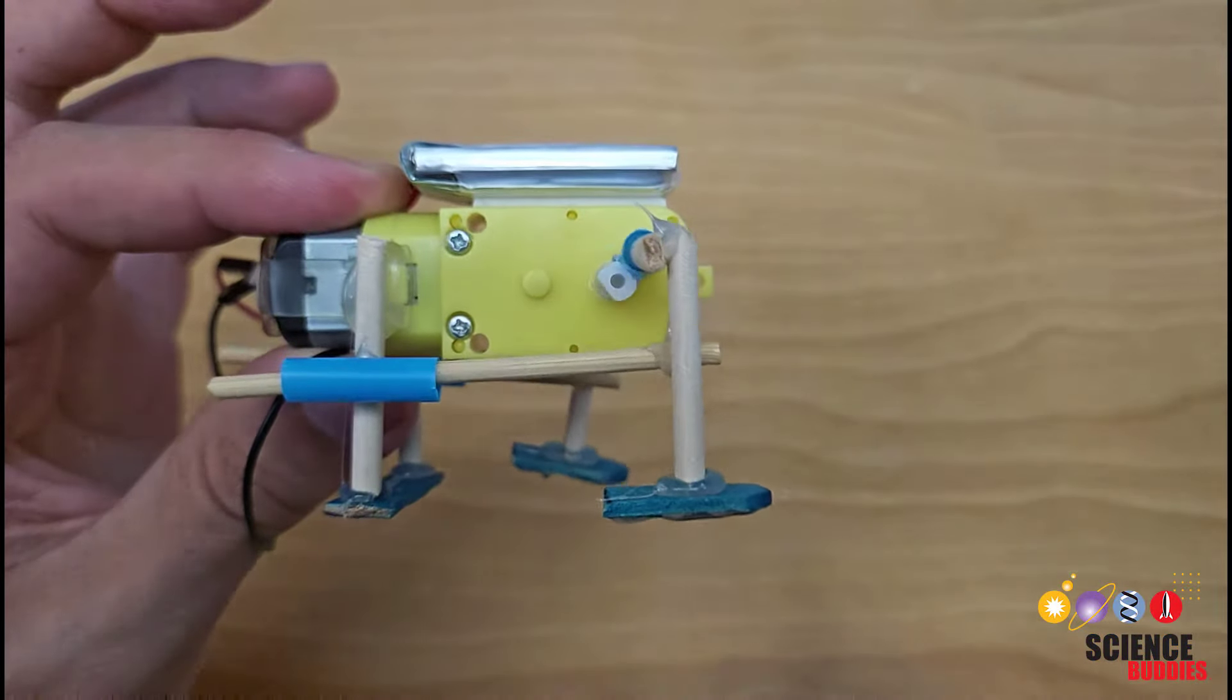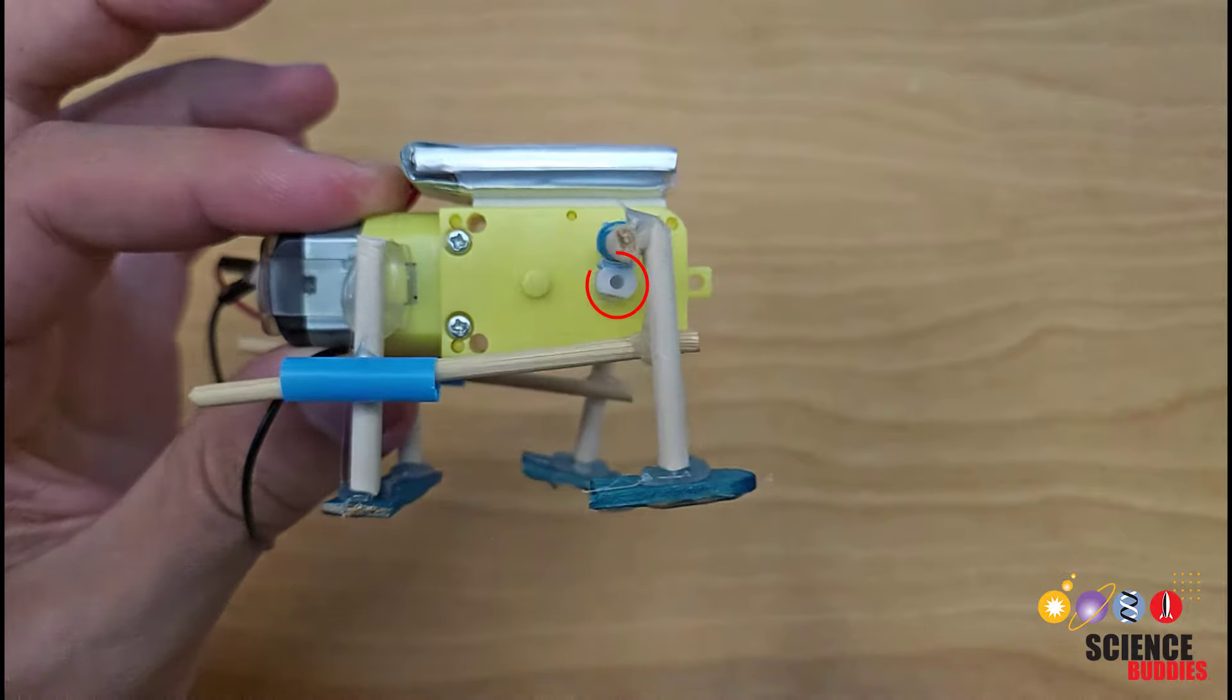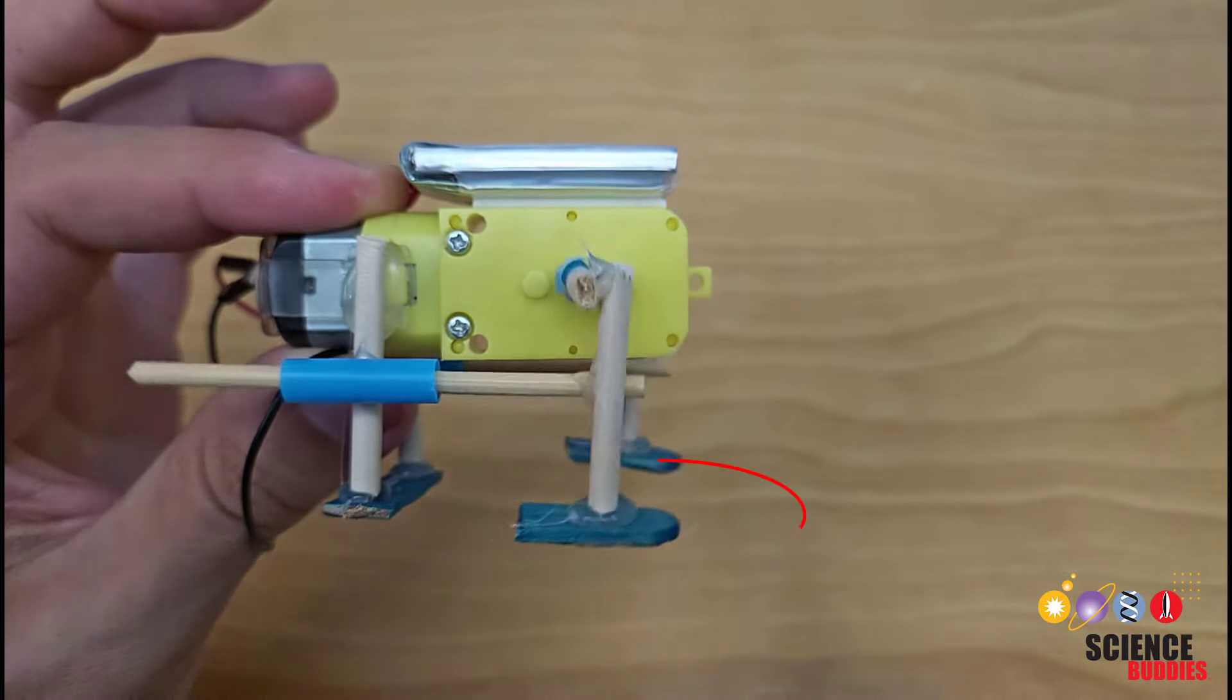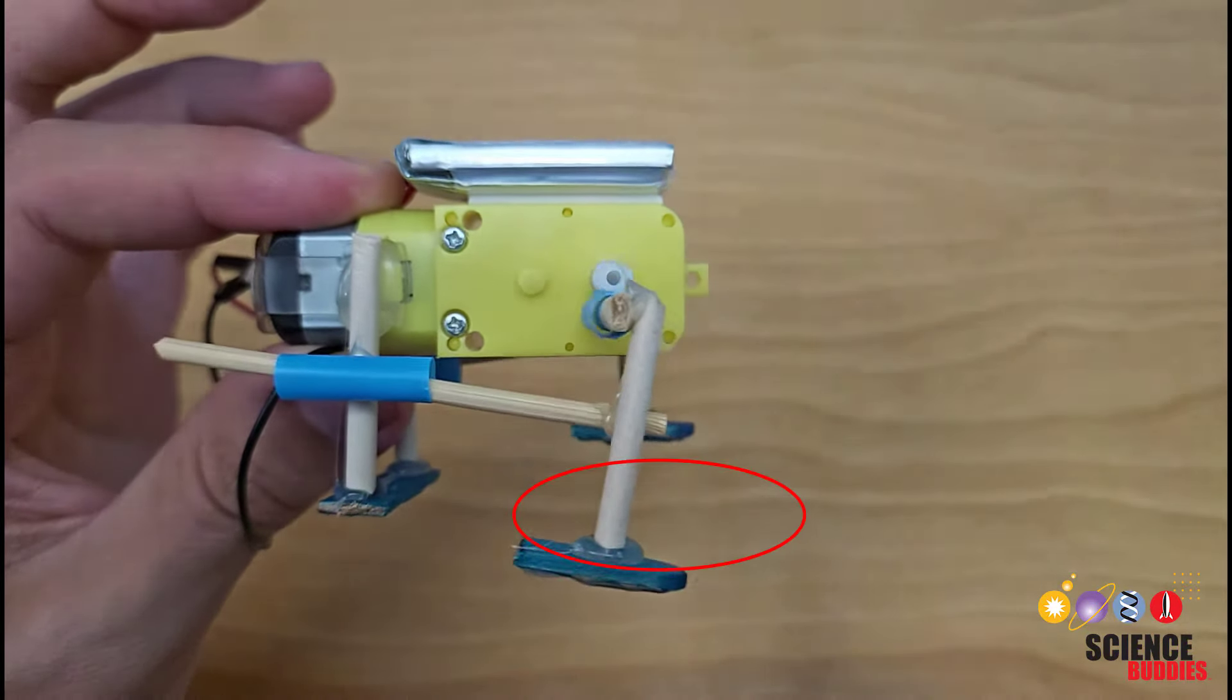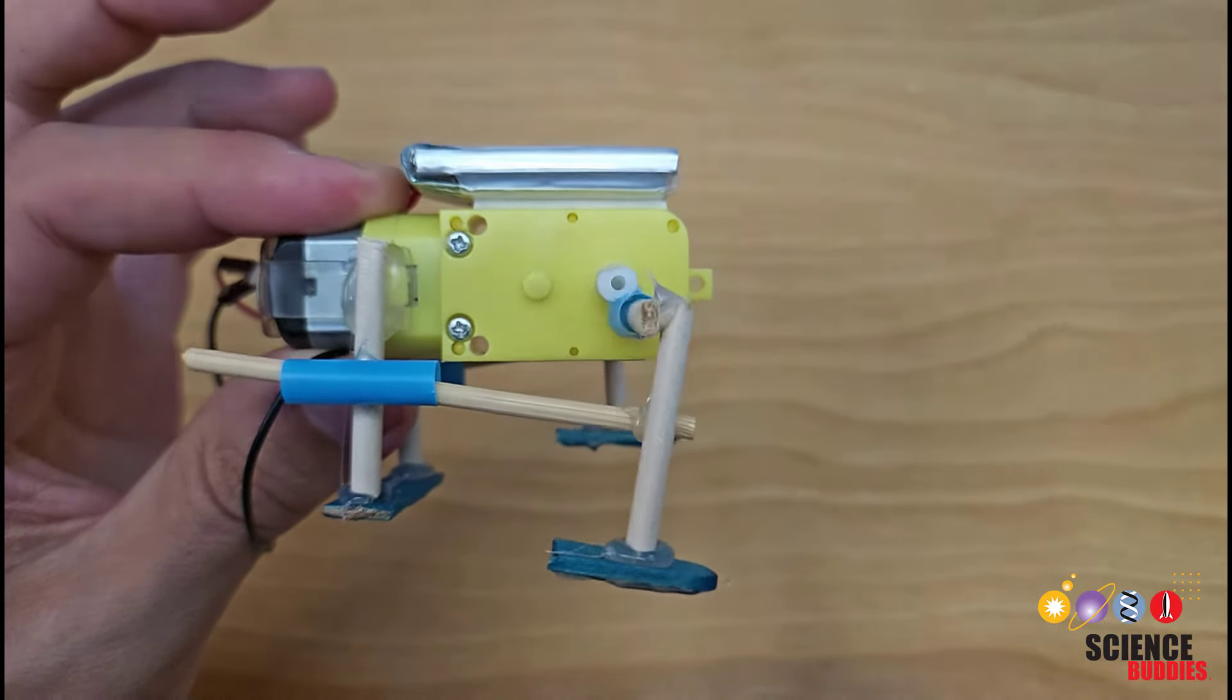You can see how the robot works in this slow motion clip. A linkage mechanism converts rotational motion of the motor shaft to oscillating motion of the feet. The two feet move out of sync with each other. One is up while the other is down, which is what allows the robot to walk forward.